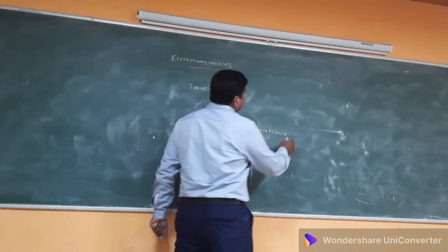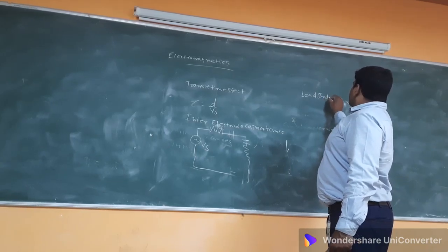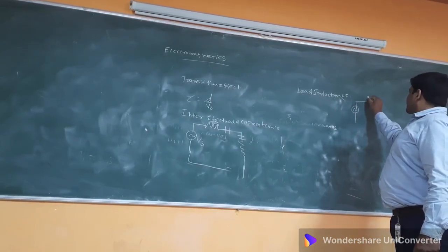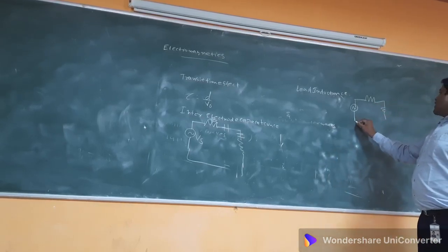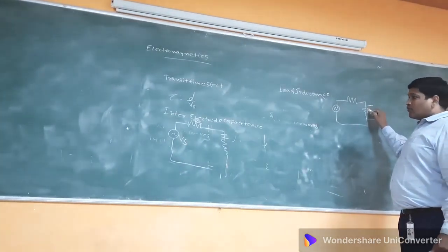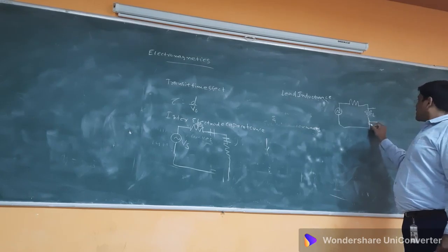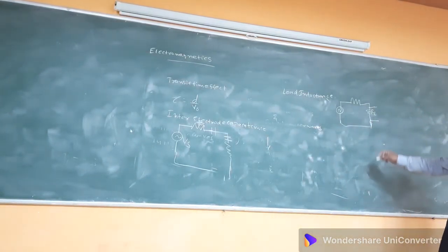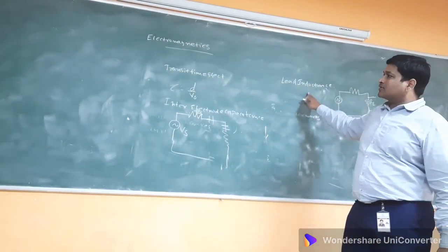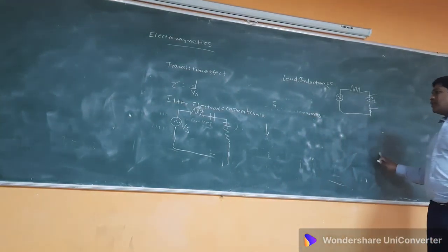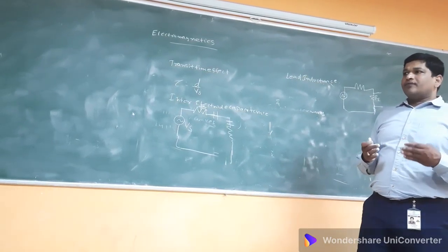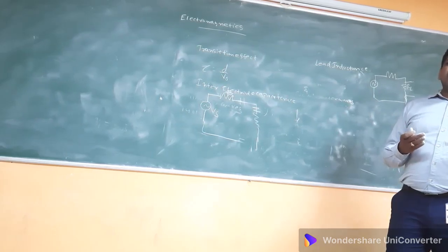Another problem is lead inductance. Lead inductance refers to the inductance developed at the leads when connecting the circuit with a particular source and a load resistance. At the load terminal the voltage should be dropped, but some inductance developed here restricts the load drop, causing dissipation — this is called lead inductance. Another problem is inter-disturbance between the components, where variation in the components can disturb the tuning effect.